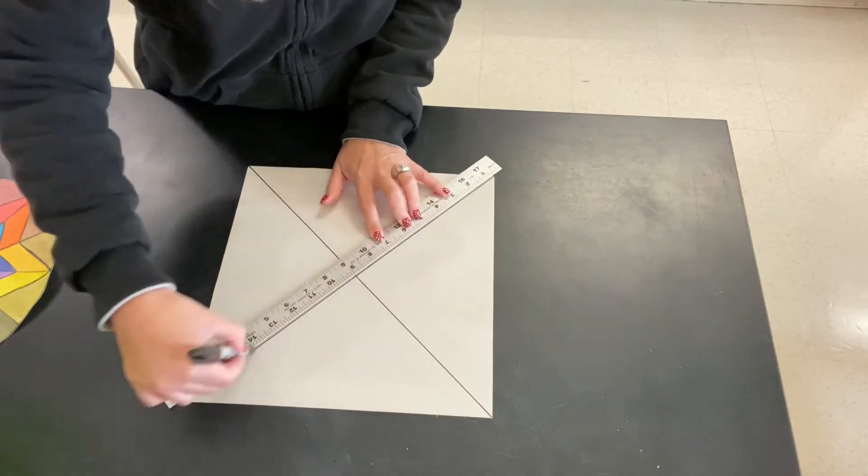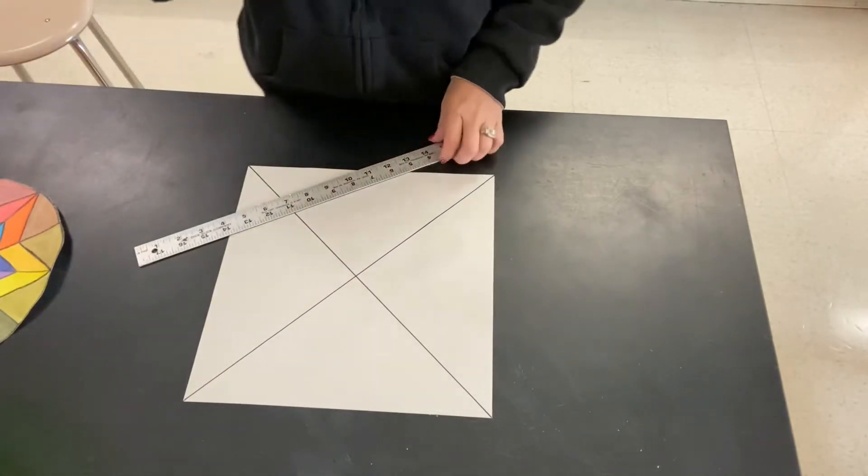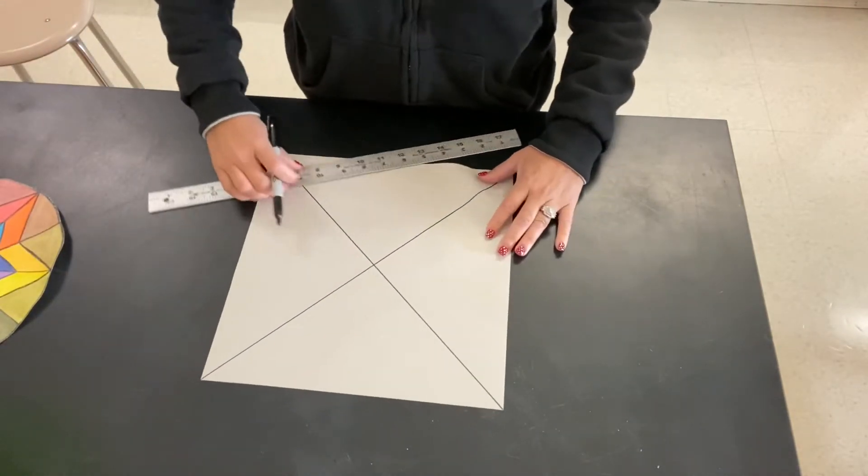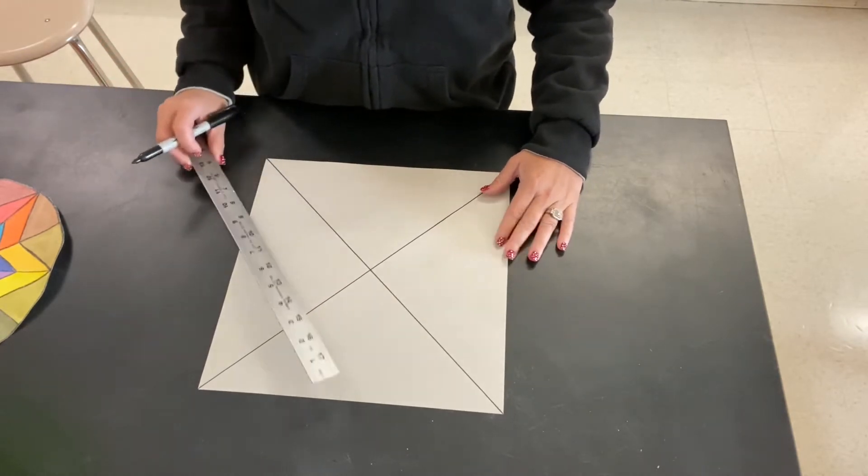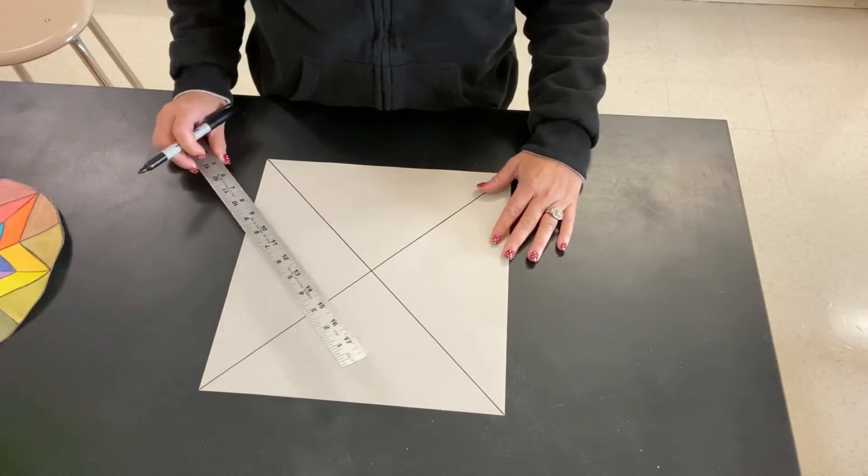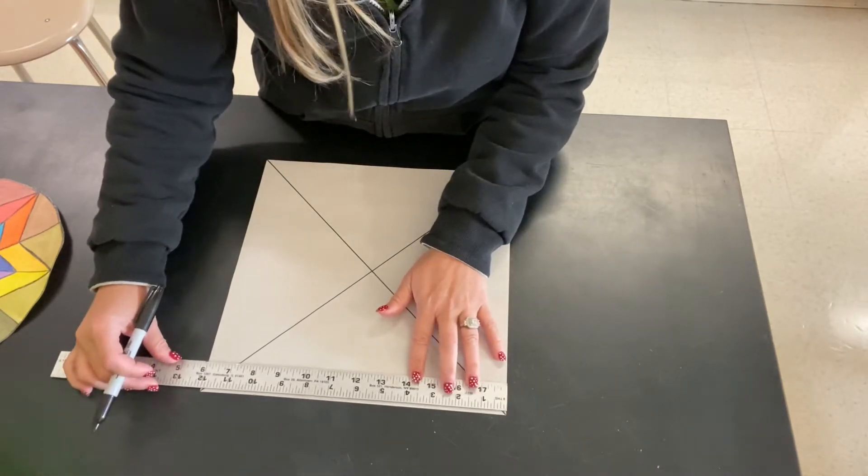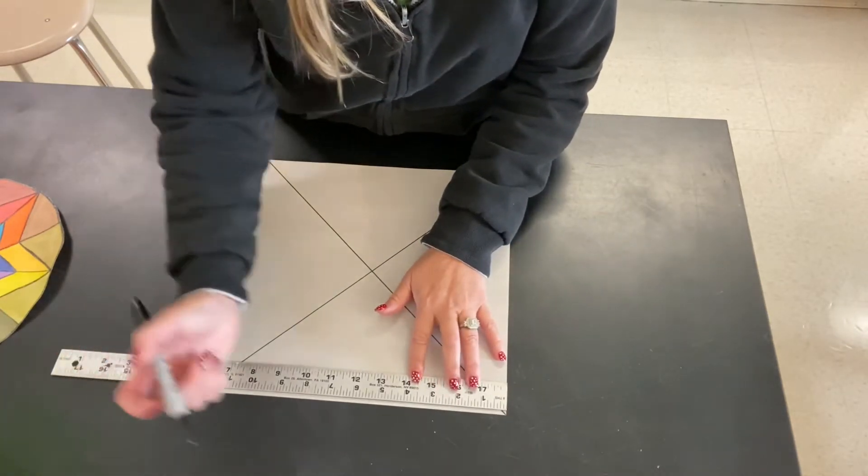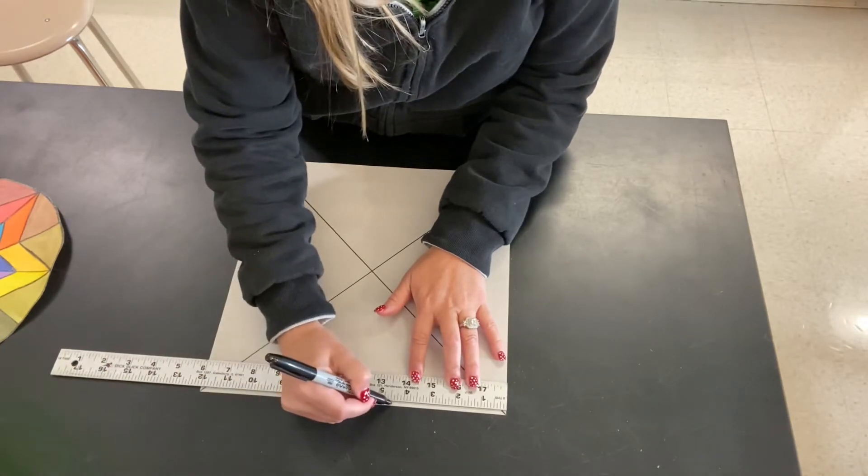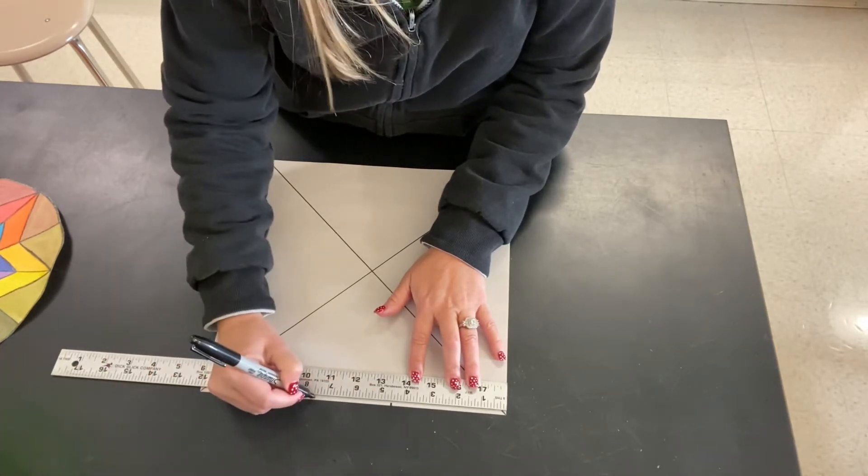Now where these two lines cross is the exact center of your piece of paper. What we would usually do is use a protractor, but I'm not sure everybody has a protractor at home. So what we're going to do now is measure across the edge of our paper at four and a half inch and seven and a half inch marks.